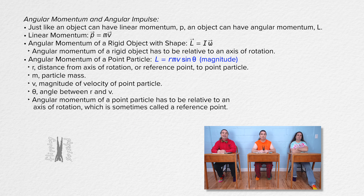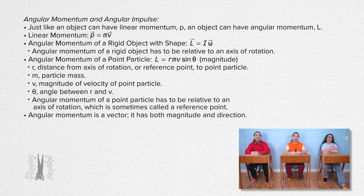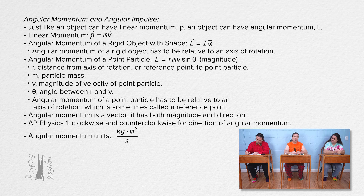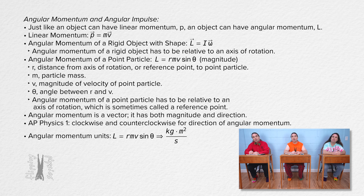The angular momentum of a point particle has to be relative to an axis of rotation, sometimes also called a reference point. This equation gives the magnitude of the angular momentum of a point particle. Just like linear momentum, angular momentum is a vector with both magnitude and direction. In AP Physics 1, we use clockwise and counterclockwise to indicate the direction of angular momentum. The units for angular momentum are kilograms times meters squared over seconds.